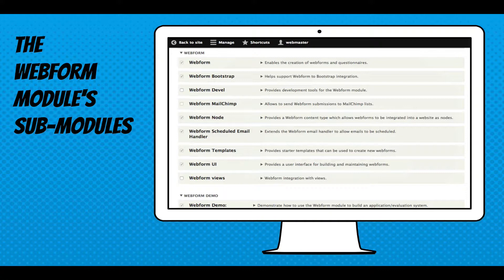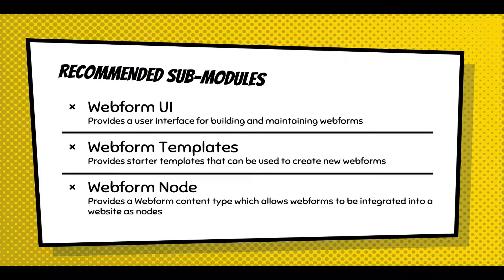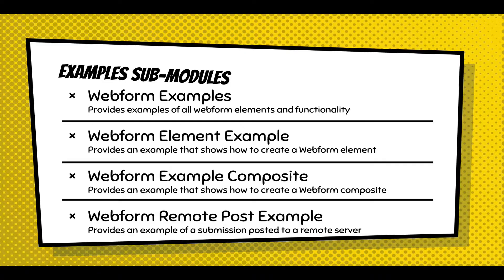I've installed a Webform Mailchimp add-on, which is a third-party module. There's also a scheduled email handler and templates. The UI module is something everyone's going to enable — it provides a drag-and-drop UI for moving around your elements. If you don't install it, you'll have to edit the raw YAML behind a form. Templates make it easy to set up starter templates, and Web4 Node is node integration. There are also a lot of examples included — if you install the main examples module, you'll get a style guide to look at all the elements and how they look and feel.